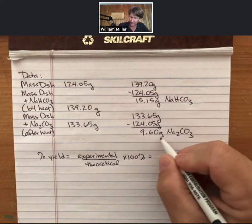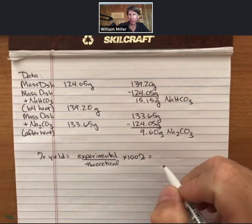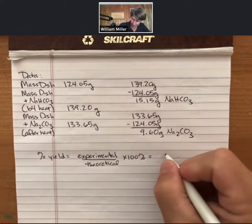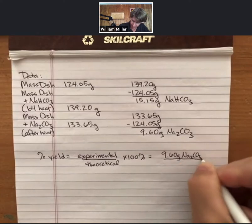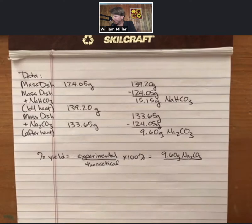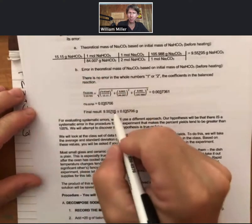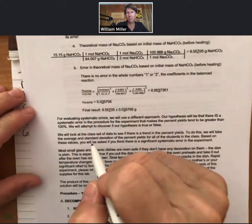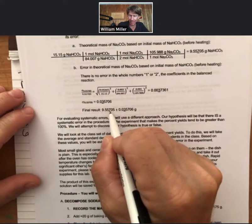Here, 9.6 grams is the experimental amount of sodium carbonate. The lab shows you the final results for the mass of sodium carbonate based on the initial amount of sodium bicarbonate, calculated using stoichiometry. That's why the calculated or theoretical amount is 9.5705 grams.